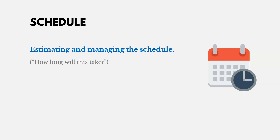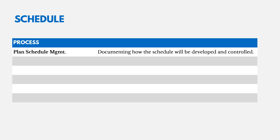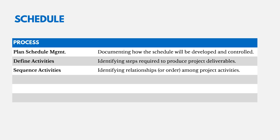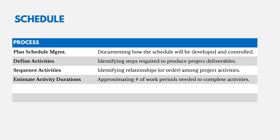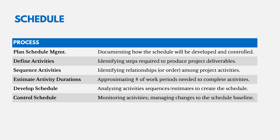Schedule management involves estimating and managing how long things will take. There are six processes — five in planning and one in monitoring and controlling. We plan schedule management, then define activities by breaking the WBS down into individual steps required to produce deliverables. We sequence those activities in the right order, estimate their durations, and develop the schedule by analyzing sequences and estimates to create the schedule baseline. Finally, we control the schedule by monitoring activities and managing changes to the schedule baseline.